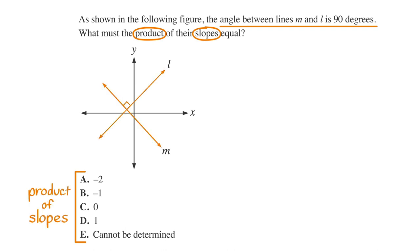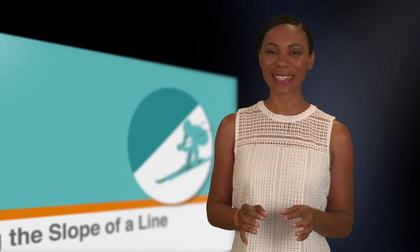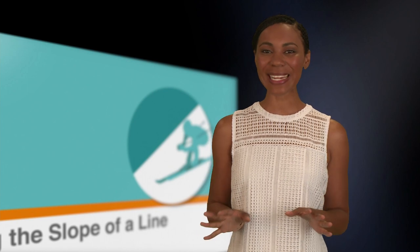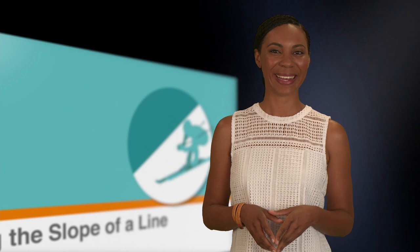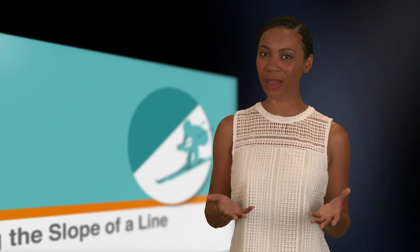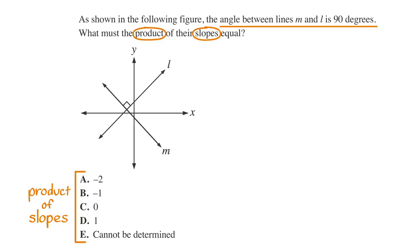Perpendicular lines form a 90-degree angle with each other, so we know these lines are perpendicular. We can use the picking numbers strategy to solve this problem, since any time we're looking for the product, ratio, sum, or difference of two unknown numbers, we can usually pick numbers. Since we know that the slopes of perpendicular lines are the opposite reciprocals of each other, let's pick a number for the slope of line L.